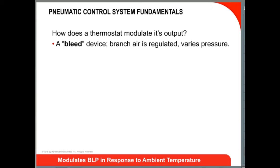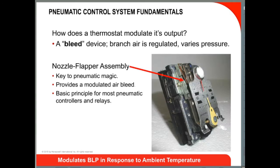The heart of a pneumatic controller, a pneumatic thermostat, is a simple but effective device called the nozzle flapper assembly. It provides a way to bleed off supply air to produce a smooth modulated output control signal. This modulating output signal is referred to as the branch line and provides the control signal to operate valve or damper actuators as well as other pneumatic relays.